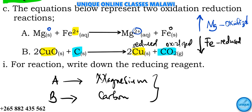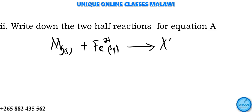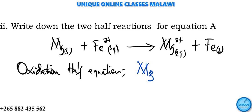Let's now write the two half equations for equation A. Our equation is: magnesium solid reacting with iron two-plus in aqueous state to give magnesium two-plus in aqueous state plus iron in solid state. The oxidation half equation shows what happened to magnesium: Mg(s) → Mg²⁺(aq).